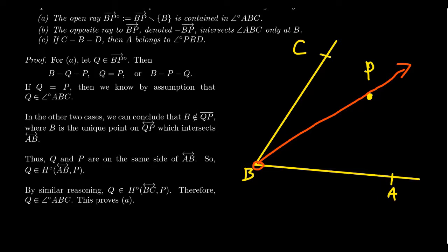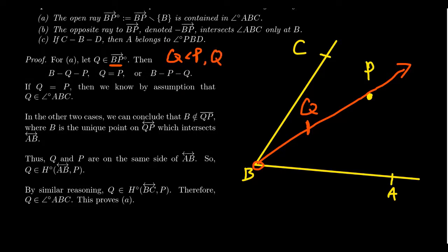To prove this, we take an arbitrary point Q on the open ray BP and argue that Q is interior to angle ABC. By trichotomy of the ordering, with B less than P, Q must satisfy one of: Q is less than P (i.e., Q is between B and P), Q equals P, or Q is greater than P (i.e., P is between B and Q). These are the three betweenness cases.